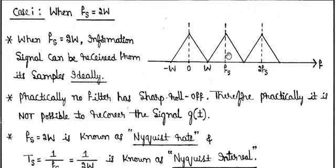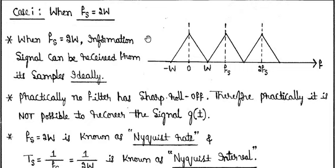The problem with the ideal condition — where sampling frequency equals 2W — is that when passing the sampled signal through a low-pass filter, you need to design a filter with an exact cutoff frequency from minus W to plus W hertz, which is difficult in practice. So for practical sampling, ensure the sampling rate is greater than 2W for easier signal recovery.